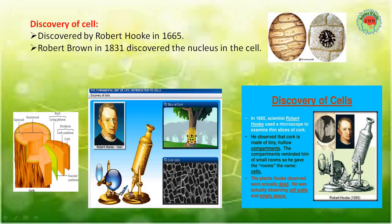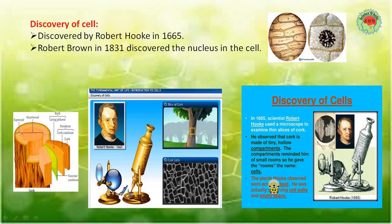He prepared a slide of that covering and then observed it. He found tiny tiny rooms in the slide. Those tiny rooms were called cells. The word 'cell' reminded him of small compartments or rooms, so he gave them the name 'cell.' The plants he observed were actually dead bark, and he was actually observing cell walls and empty spaces inside the cells.